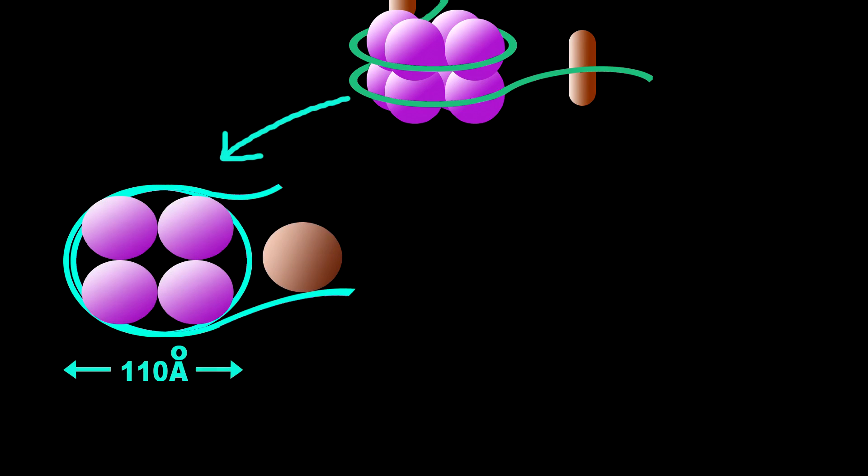The nucleosome has an egg-like shape. It has 110 angstrom diameter and 60 angstrom height.